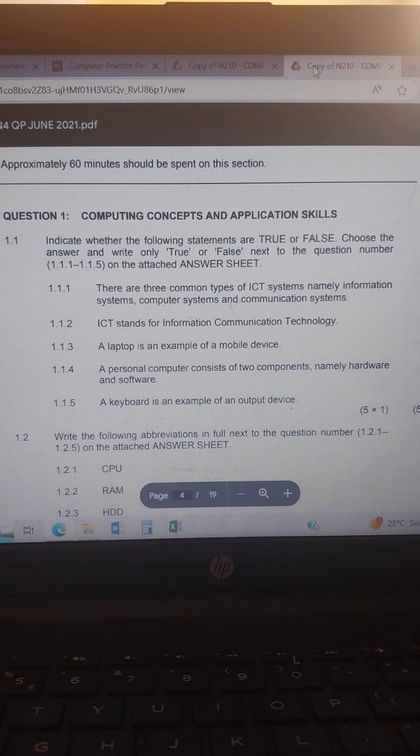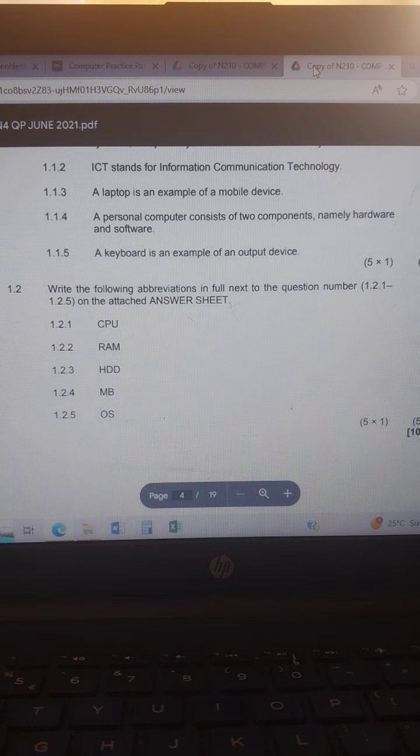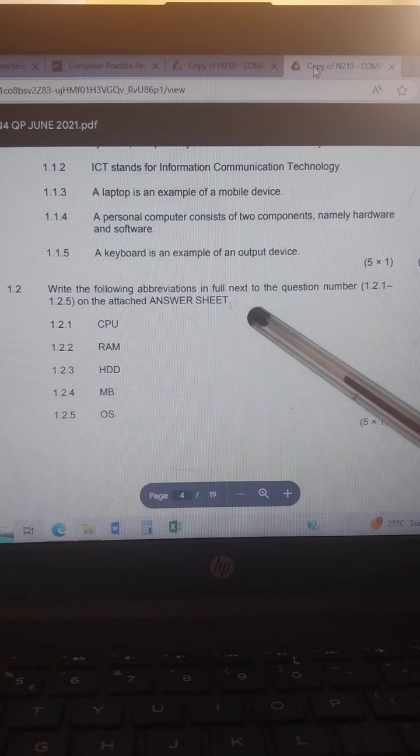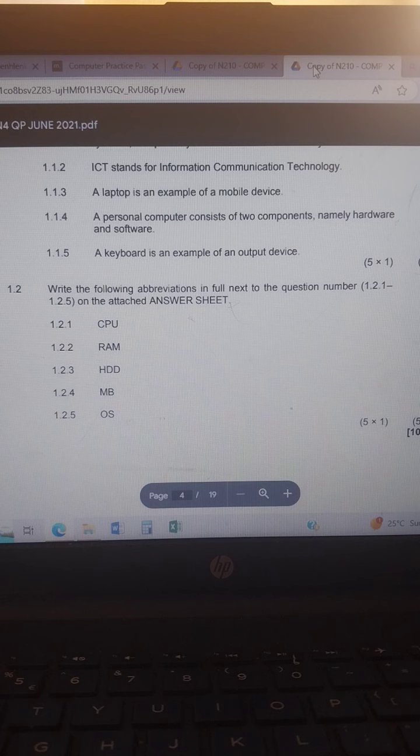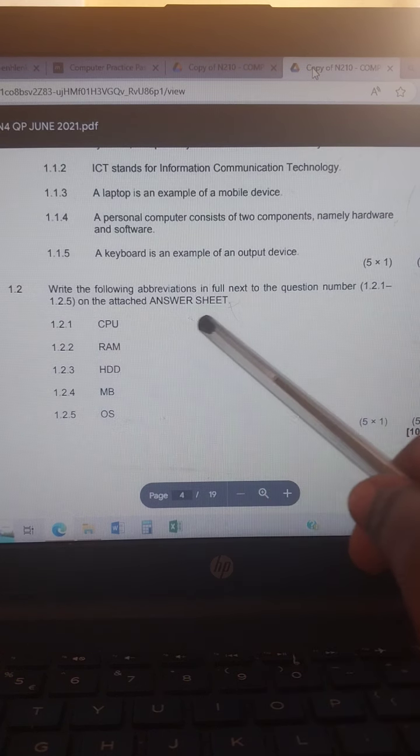Then let's go to the second one. Number one, it says write down abbreviations in full next to the question number. So number one is CPU. CPU stands for central processing unit.